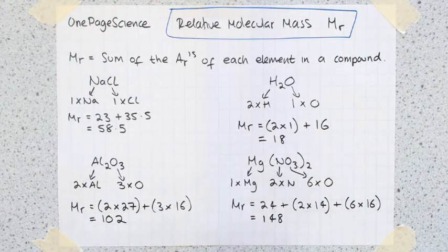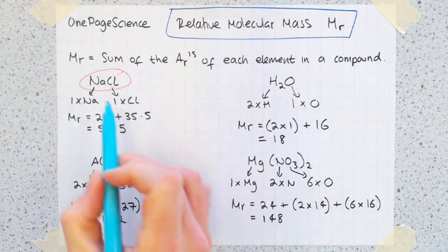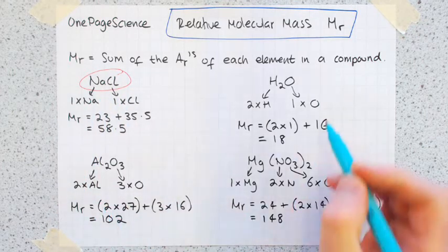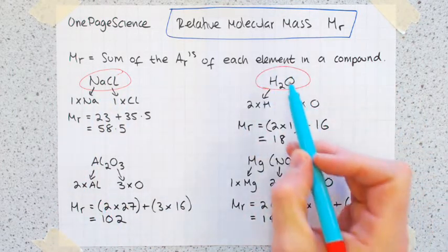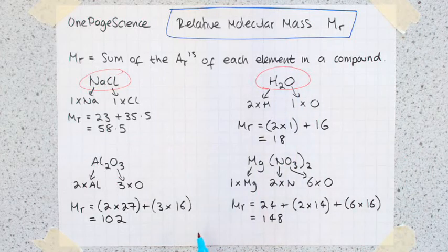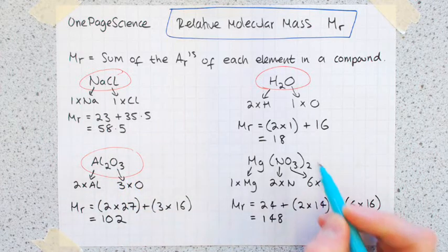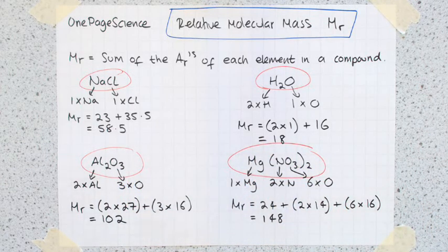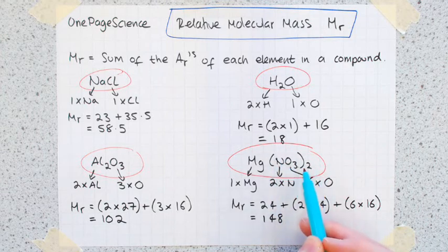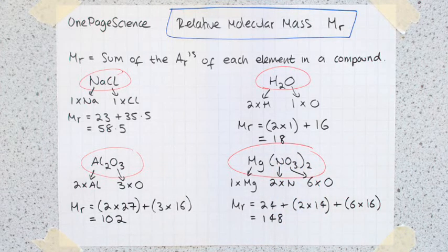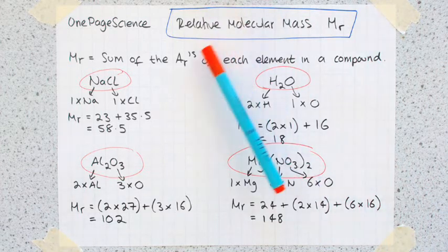So four examples there for you: sodium chloride, you've just got one of each; water, two hydrogens, one oxygen; aluminium oxide, multiples of each, so two aluminiums, three oxygens; and this last one is about as difficult as it gets for GCSE, when you've got these brackets, so you have to make sure you multiply up each thing in brackets. So that's relative molecular mass, done.